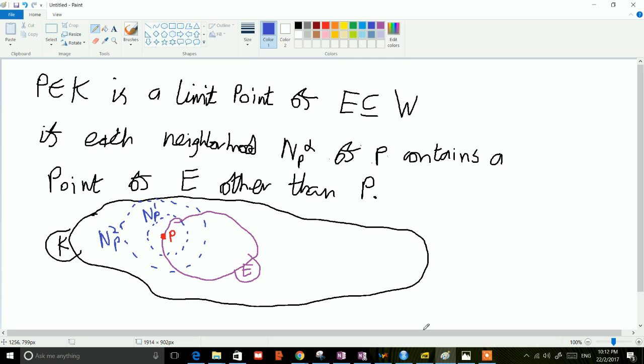So imagine we have a set K of different elements. Now, if P is an element of K, then P might be a limit point. So when might it be a limit point?